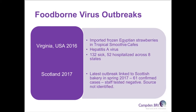A couple of fairly recent outbreaks associated with hepatitis A are worth noting. One in Virginia, USA, started in 2016 and was associated with imported Egyptian strawberries contaminated with hepatitis A, which were used to produce tropical smoothies consumed in smoothie cafes across various US states. That resulted in 132 people getting sick with 52 hospitalisations across 8 states.